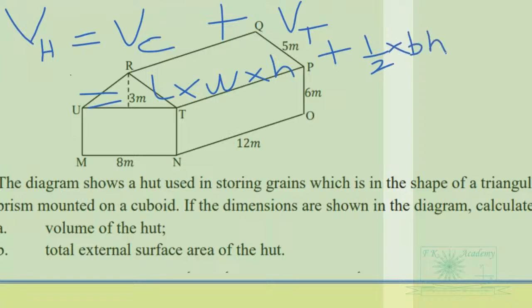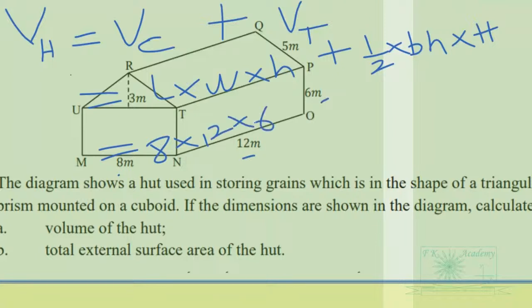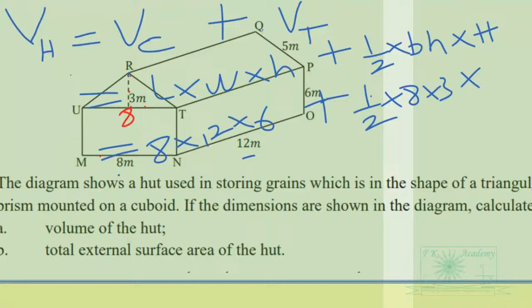So the volume of the cuboid is length times width times height: 8 times 12 times 6. This is added to half times the base — the base of the triangle is 8, because this side is equal to this side in length — times the height of the triangle, which is 3 meters, times the height of the prism, which is RQ equal to TP equal to NO, which is 12 meters.